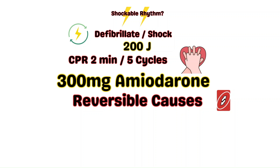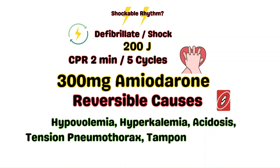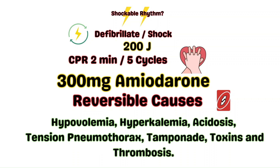At this point, we need to start addressing the reversible causes of cardiac arrest. These include hypovolemia, hyperkalemia, acidosis, tension pneumothorax, tamponade, toxins, and thrombosis. These are known as the H's and T's of cardiac arrest.